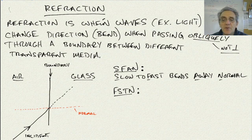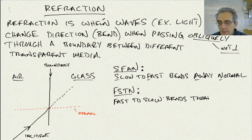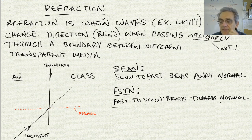These are just memorization techniques. What FSTN really stands for is: fast to slow bends towards the normal. So the letters F-S-T-N.